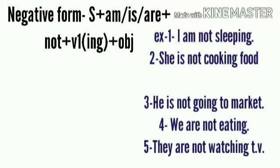Let's see the negative form of present continuous tense. Subject plus is/am/are plus not plus V1 with -ing plus object. Examples: I am not sleeping. She is not cooking food. He is not going to market. We are not eating. They are not watching TV.